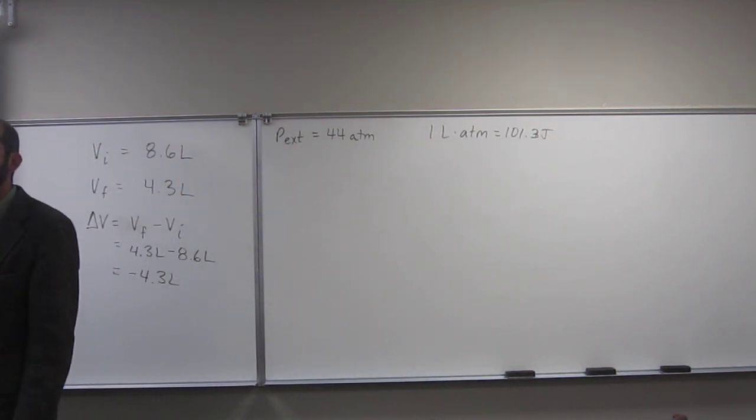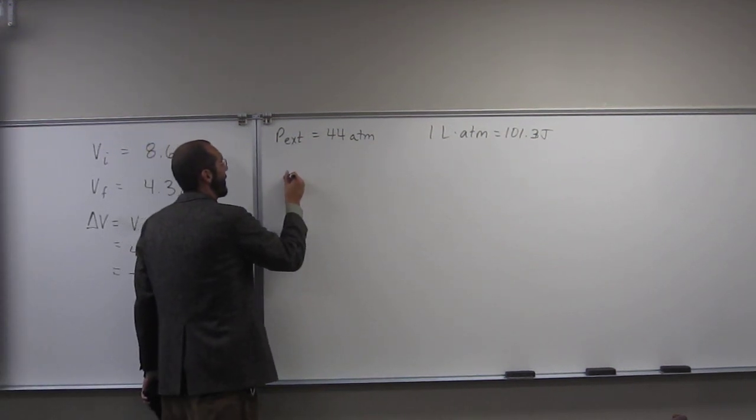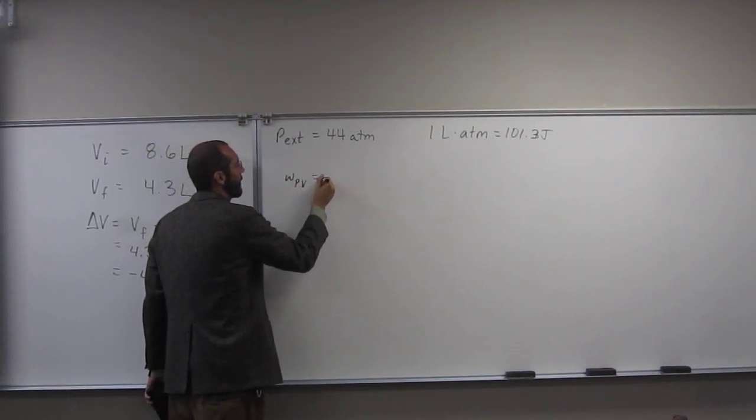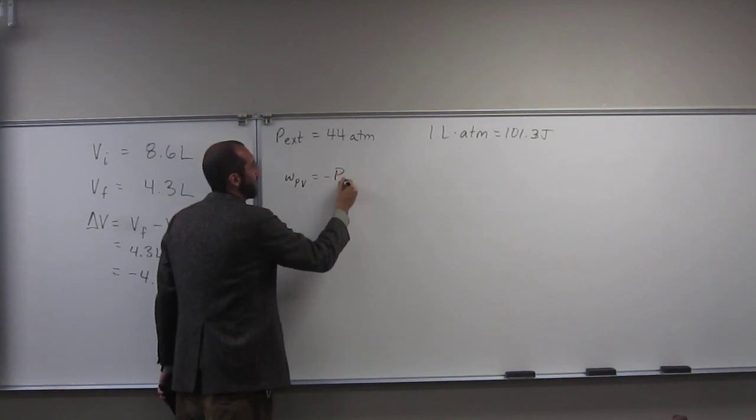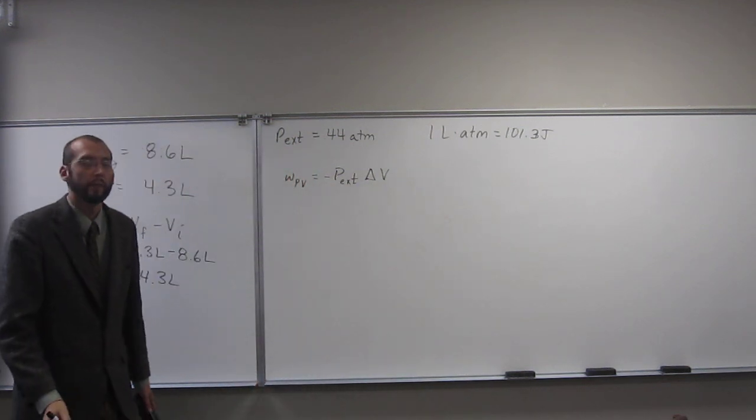And the last thing we need to know for this one? It's the work equation, right? We need to know the equation. So work PV equals negative P external times delta V, like that. Okay?